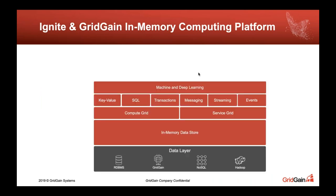If you're new to Ignite or GridGain and distributed computing, our technology is built around the Apache Ignite project — an open source project in the Apache Foundation and one of the most active communities there. Apache Ignite is a memory-centric data platform used to build fast, scalable, and resilient solutions, providing speed and scale to new and existing data-centric applications. Built around Ignite is GridGain, which adds additional enterprise-class features.